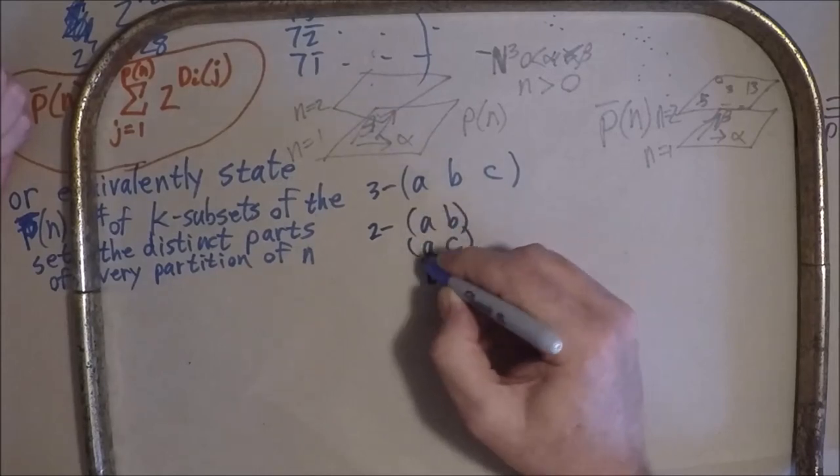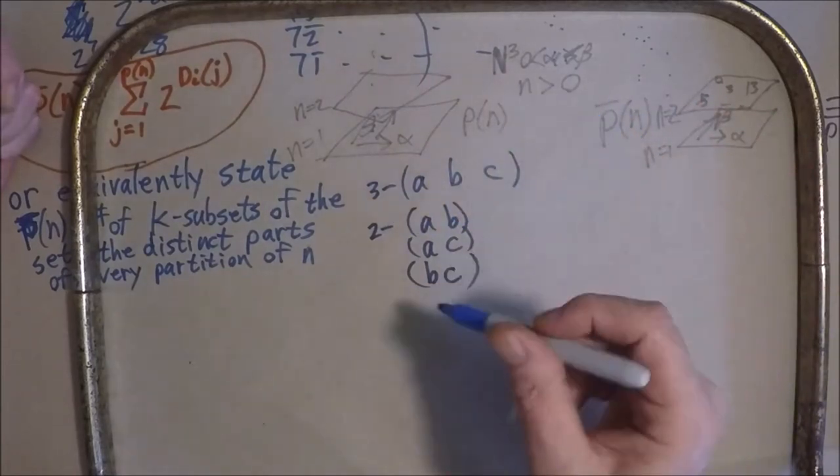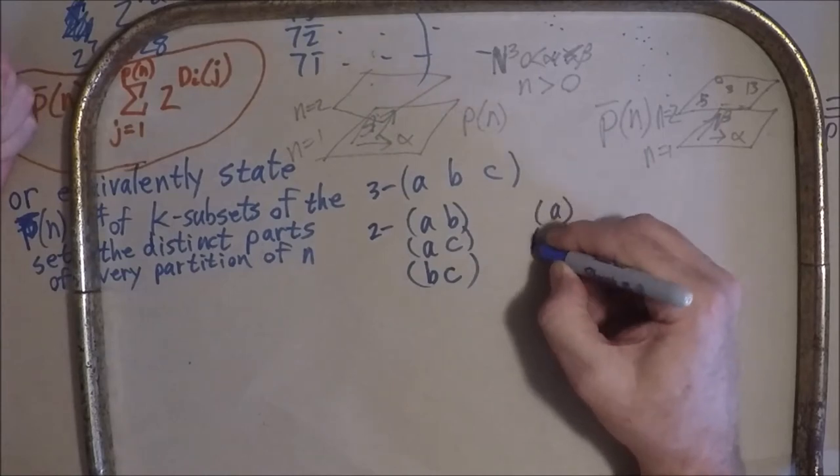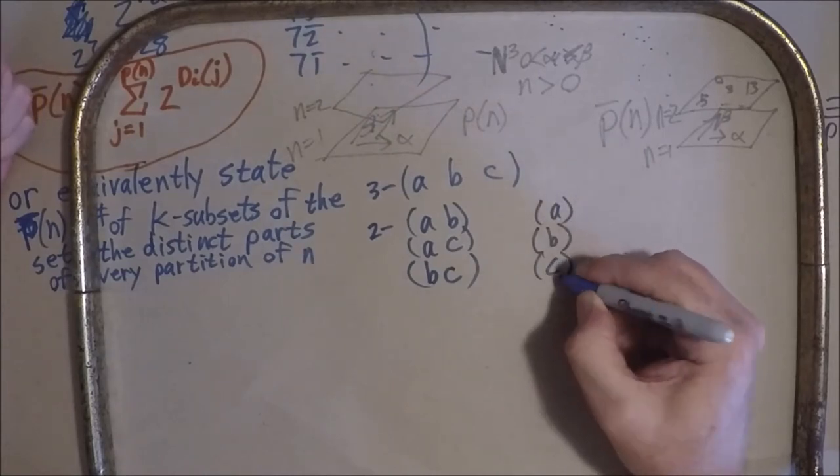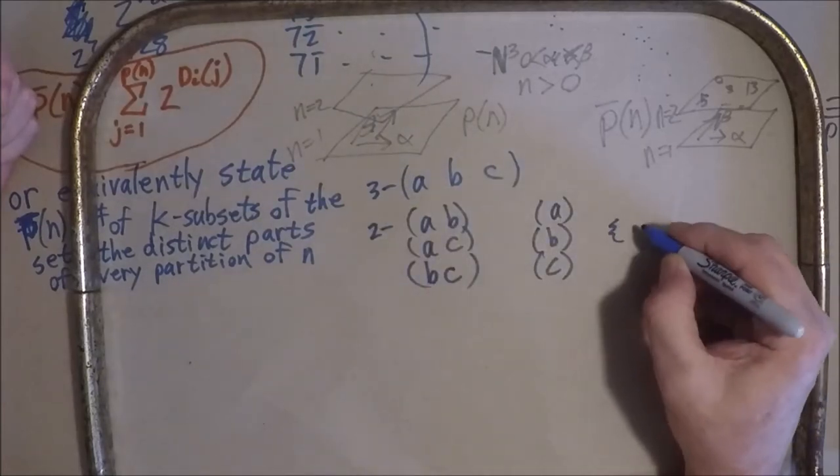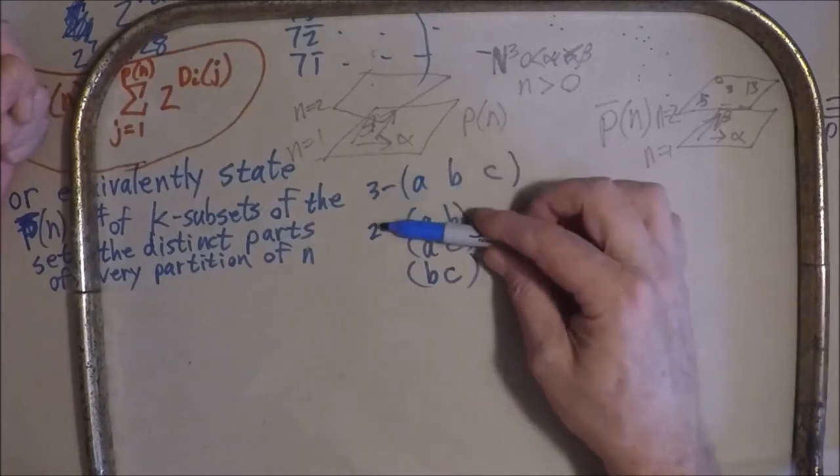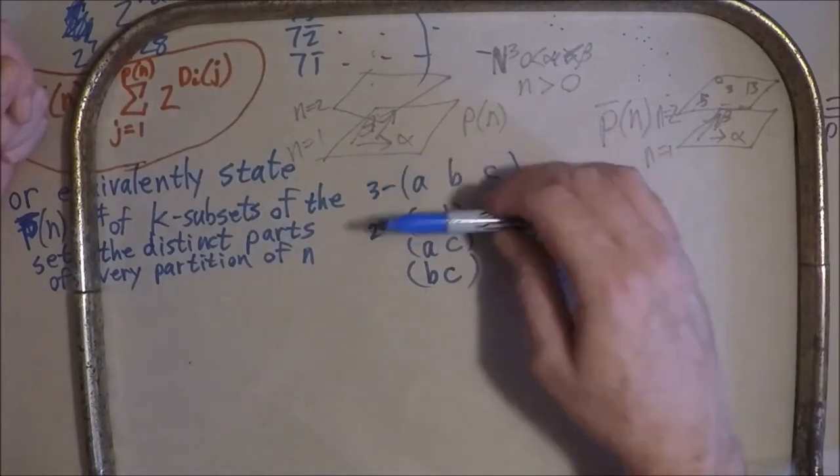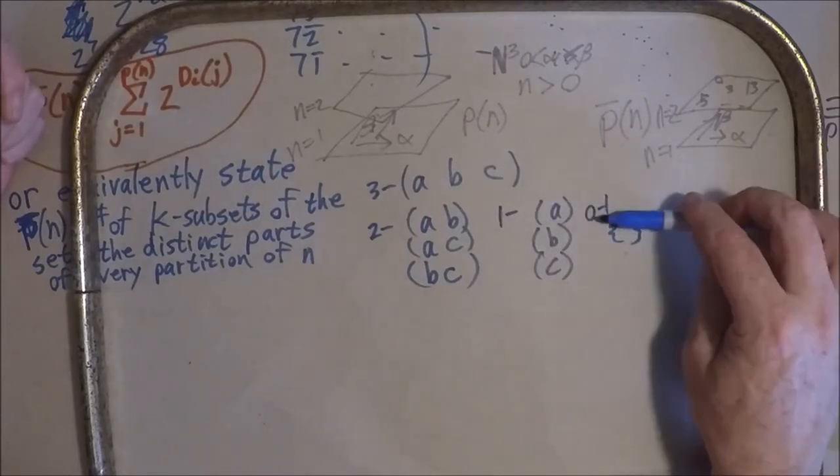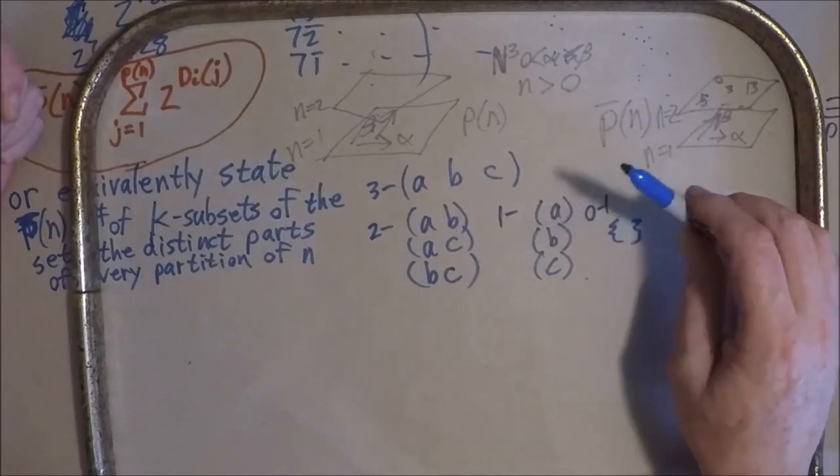And for 1, we have the empty set. So, 3, 2, I mean 0. 3, 2, 1, and we also count the 0th, the 0th subset, when k equals 0, k subset.